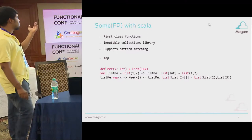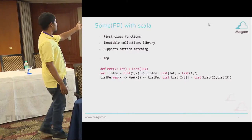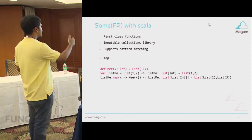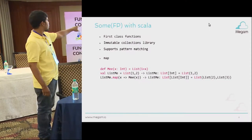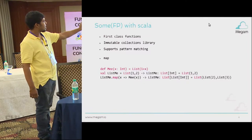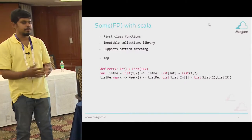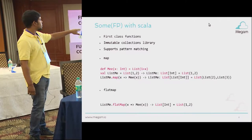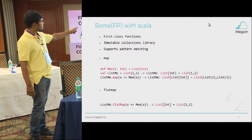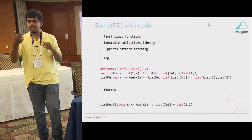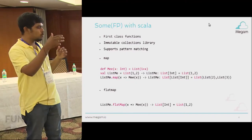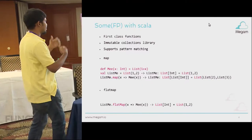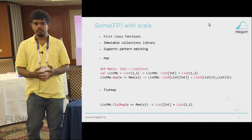A map is basically a function which, given an integer n, returns a list incremented by one. You create a list of one, two, map it, apply the function, and you get a list of two, three. FlatMap is pretty similar — you take a list of one and two, apply it, and it flattens the inner type. List of list-two and list-three becomes list of two, three. This is the basic introduction of how Scala supports functional programming.